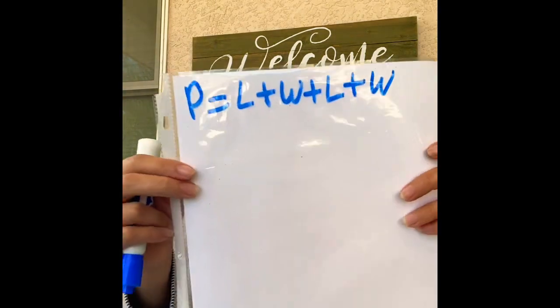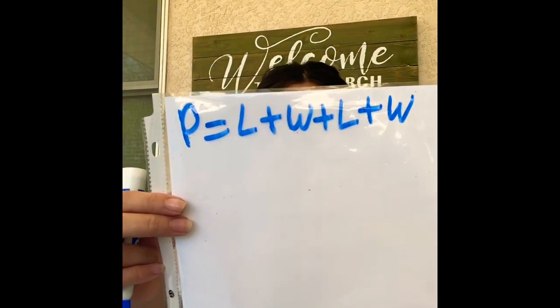The first thing we're going to do is go over perimeter. We need to remember that the formula for perimeter is length plus width plus length plus width. It's going to look just like this.